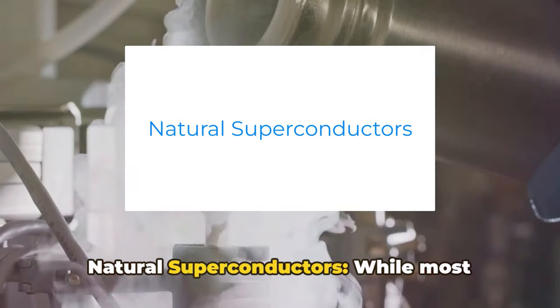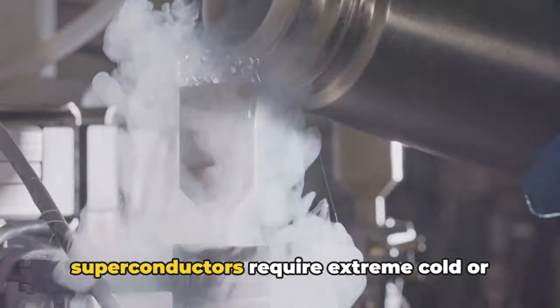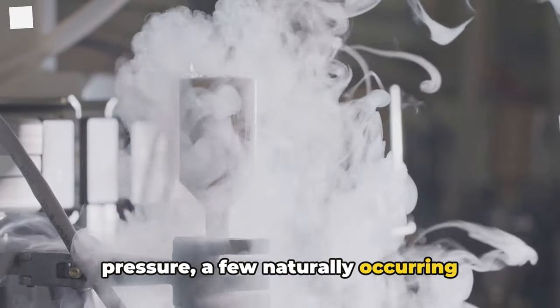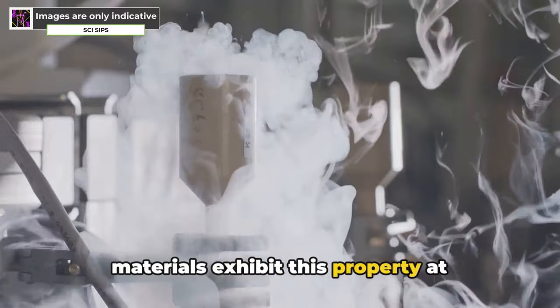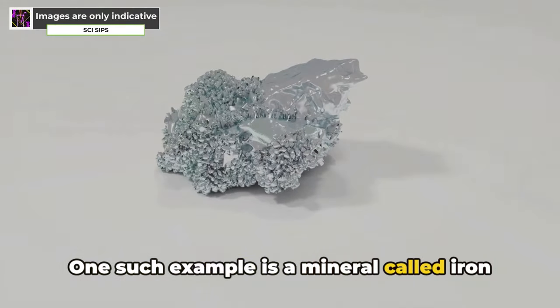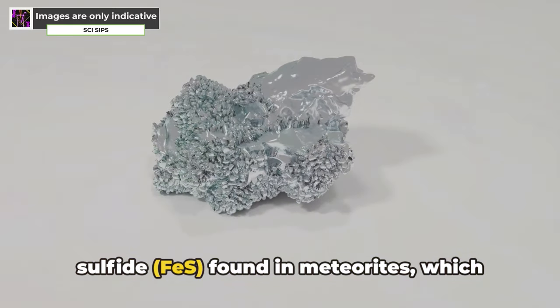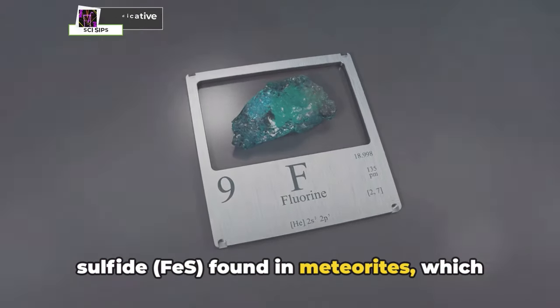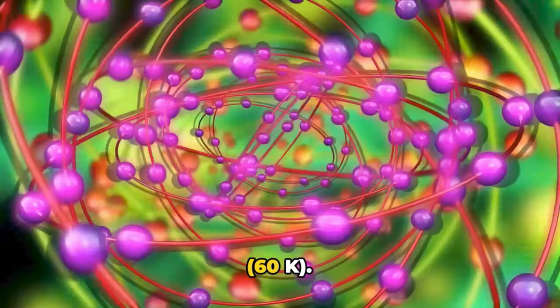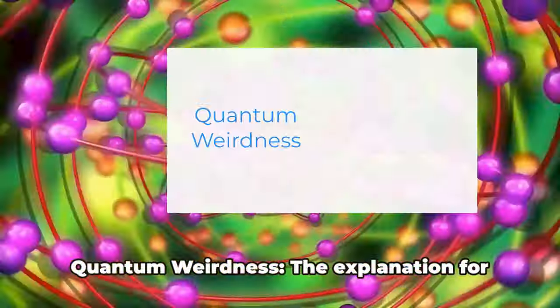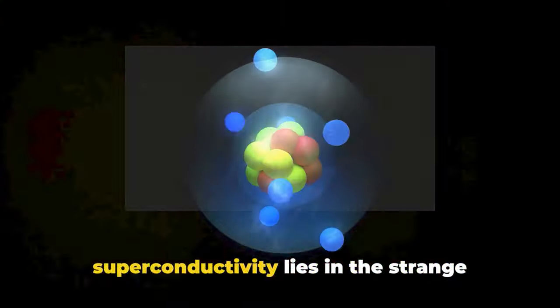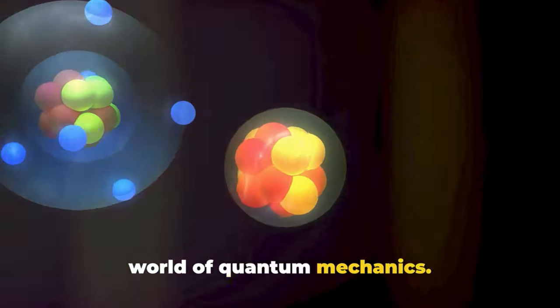Diamagnetism. Superconductors exhibit a fascinating property called diamagnetism. They repel magnetic fields entirely, pushing them out like an invisible shield when cooled below their transition temperatures. This phenomenon is responsible for the levitation of superconductors, where they seem to float in mid-air above magnets. Natural superconductors. While most superconductors require extreme cold or pressure, a few naturally occurring materials exhibit this property at relatively high temperatures. One such example is a mineral called iron sulfide, FeS, found in meteorites, which becomes superconducting at around minus 213 degrees Celsius, 60 K.